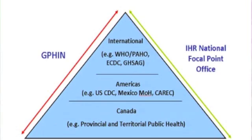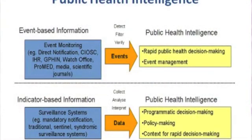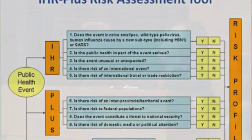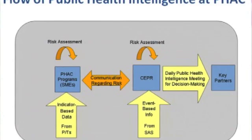We don't only look at event-based information — we now also look at indicator-based information. This is the model used within the agency to gather public health intelligence and determine what are the risks or public health events that are a risk to Canadians. Collectively in the Situational Awareness Section and with program areas, we all use a risk assessment tool that has broader criteria for looking at risk for Canadians.